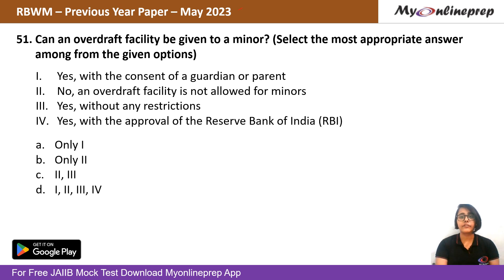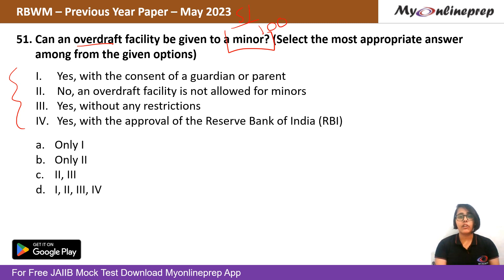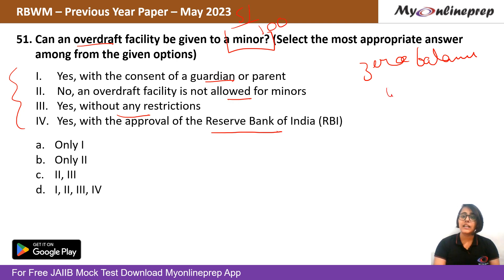Question 51: Can an overdraft facility be given to a minor? This is a multiple statement type question. The options are: (A) Yes, with the consent of the guardian or parent; (B) No, an overdraft facility is not allowed for minors; (C) Yes, without any restrictions; (D) Yes, with the approval of the RBI. An overdraft facility allows withdrawal even with zero balance. In India, banks do not allow overdraft facilities for minors. The right answer is B.